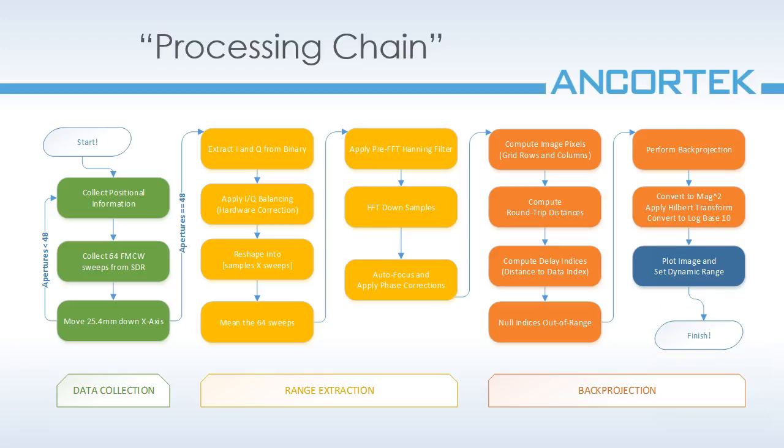Image processing begins by first massaging the raw data. I extract the raw in-phase and quadrature samples by applying IQ balancing to reduce any hardware errors. After this, I reshape my IQ data into a matrix with samples along the rows and sweeps along the columns. I apply windowing and execute a range FFT, and then average all of my sweeps to increase my SNR for that particular aperture.